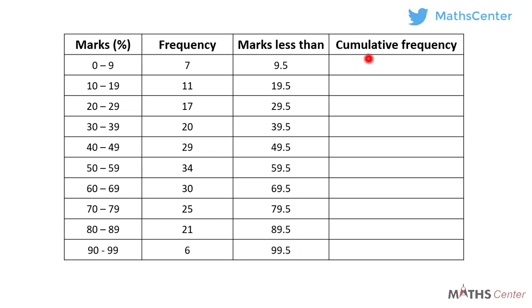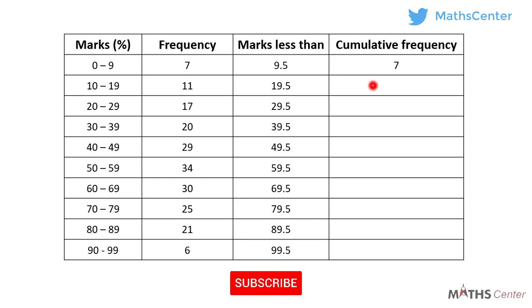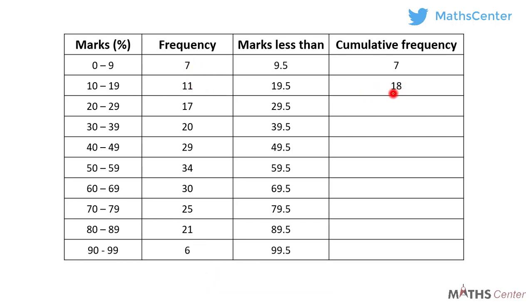Let's move on to the cumulative frequencies. To get the cumulative frequency for a particular class, you add all the frequencies up to that class. The first frequency is 7, so the first cumulative frequency will also be 7. For the next class, the frequency is 11, so the cumulative frequency will be 7 plus 11, which gives us 18. The next frequency is 17, so the cumulative frequency will be 18 plus 17, which is 35.